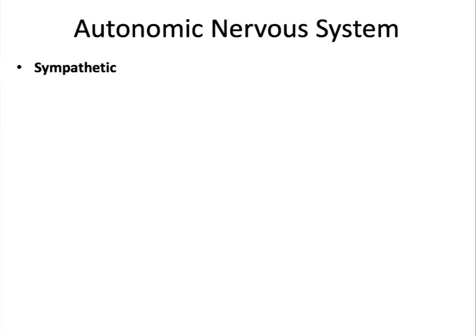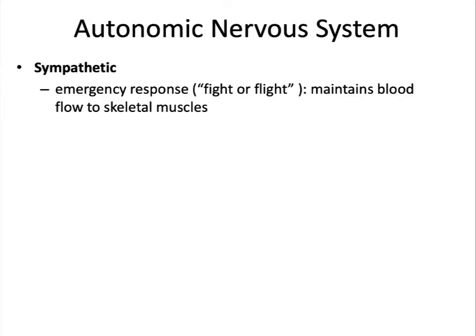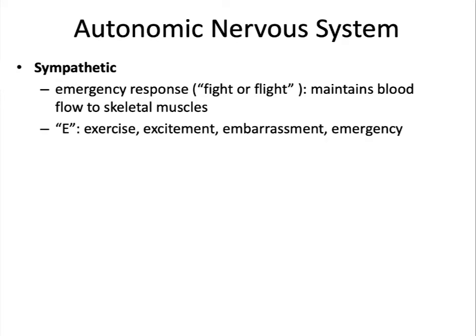The sympathetic nervous system is used in emergency responses — it is known as the fight-or-flight response. In times of emergency, it produces peak performance by maintaining blood flow to skeletal muscles. You can think of the sympathetic nervous system as being involved with things that start with an E: it is activated during exercise, excitement, embarrassment, and emergency.